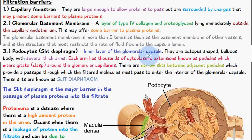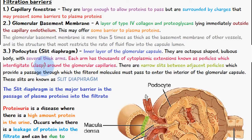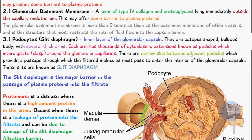The third filtration barrier involves podocytes, located in the inner layer of the glomerular capsule. They are octopus-shaped bulbous bodies with several thick arms, and each arm has thousands of cytoplasmic extensions known as pedicles, which interdigitate or clasp onto the glomerular capillaries. You can see the pedicles here grasping onto the glomerular capillaries, which is why the capillaries themselves are largely obscured in this image.